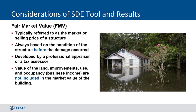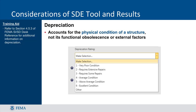Fair Market Value, or FMV, is referred to as the market or selling price of a structure. It is always based on the condition of the structure before the damage occurred and is developed by either a professional appraiser or a tax assessor. The market value is only for the structure; it does not include the value of the land or improvements such as landscaping or driveways. Depreciation accounts for just the physical condition of a structure prior to the damage event and does not take into account whether the structure is outdated or factors external to it, such as distance to shopping and parks. For more information on depreciation, refer to Section 4.5.3 of the Substantial Improvement Substantial Damage Desk Reference.